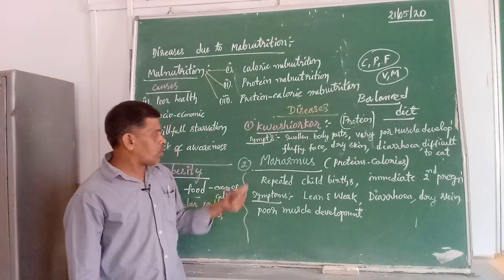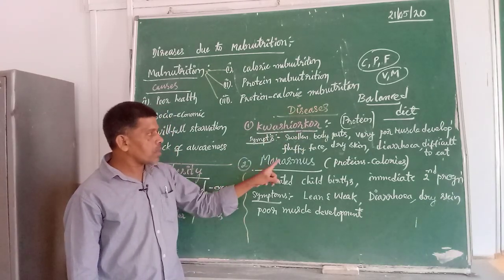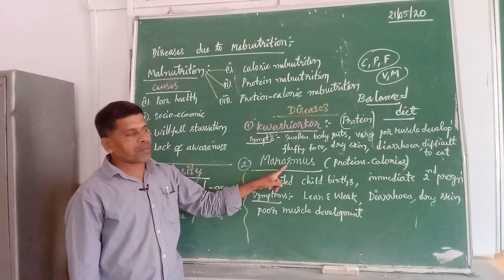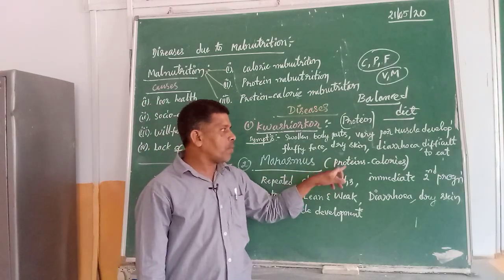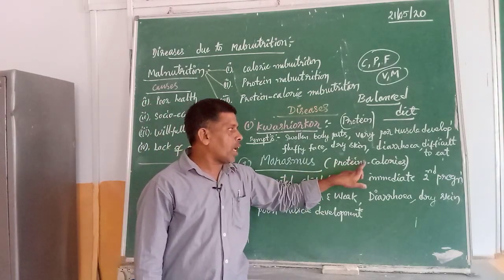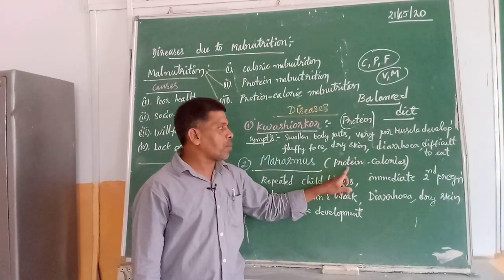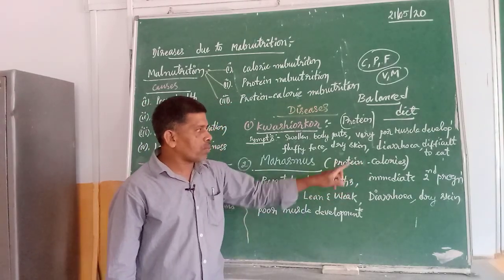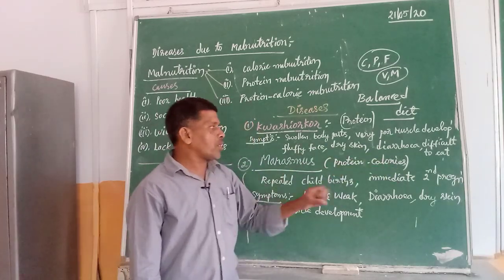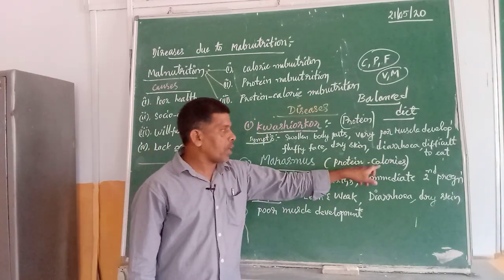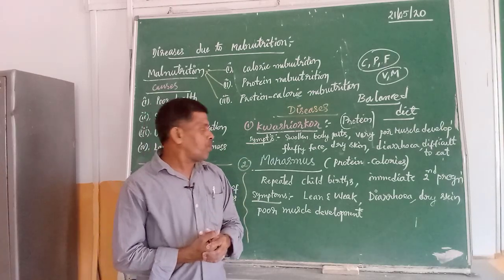Now moving to the second type of malnutrition disease: Marasmus. This is an example of protein-calorie malnutrition — it is an example of shortage of both proteins and calories.